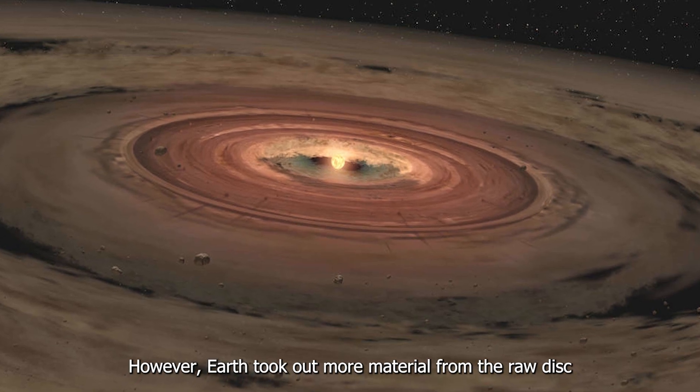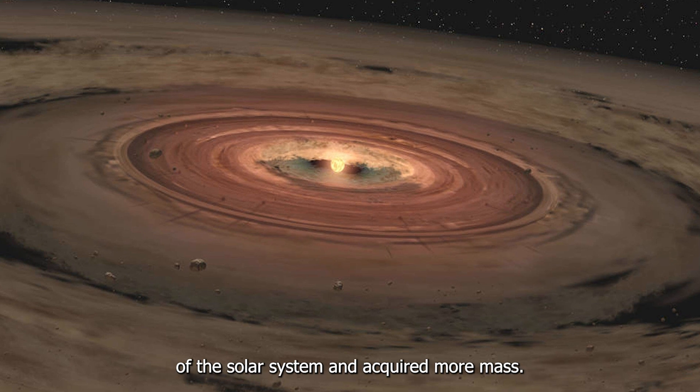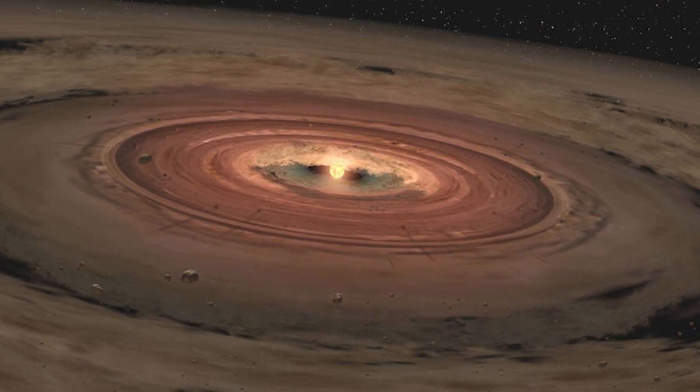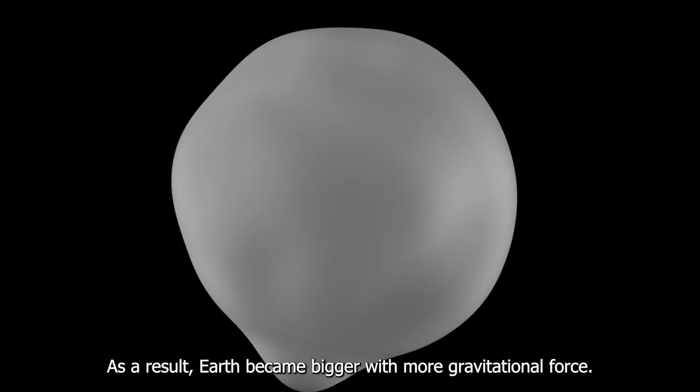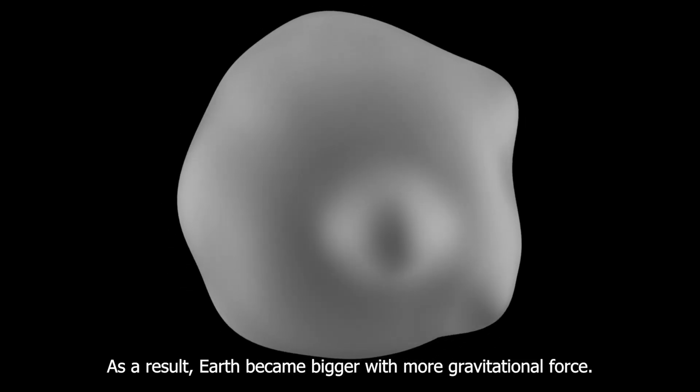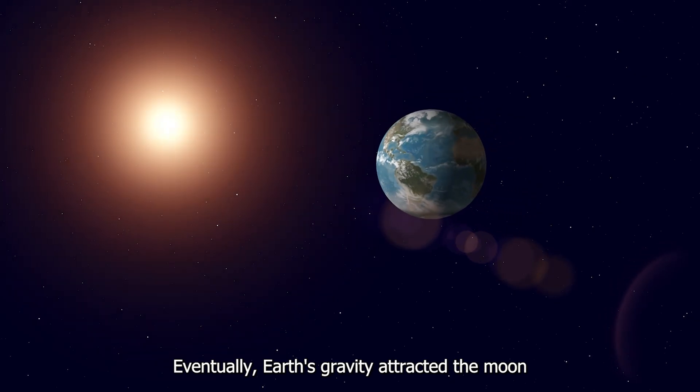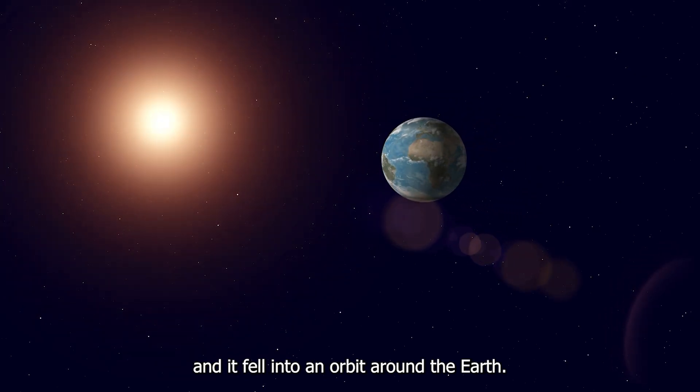However, Earth took out more material from the raw disk of the solar system and acquired more mass. As a result, Earth became bigger with more gravitational force. Eventually, Earth's gravity attracted the Moon and it fell into an orbit around the Earth.